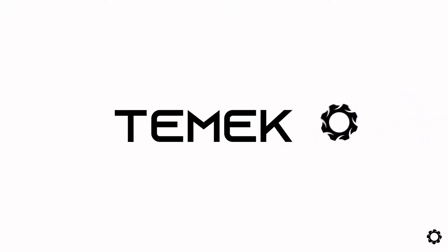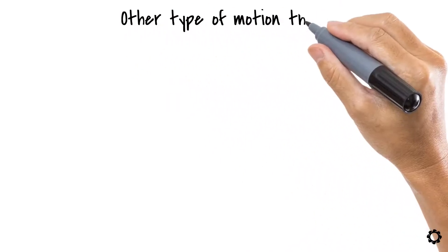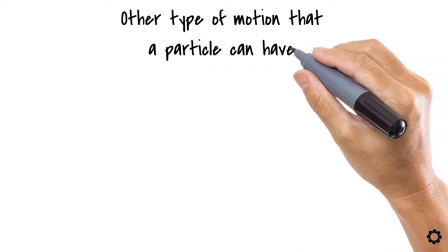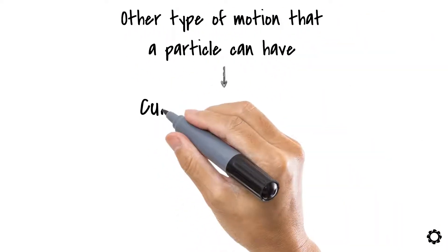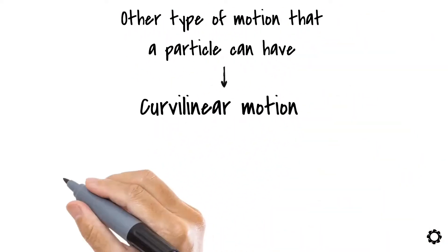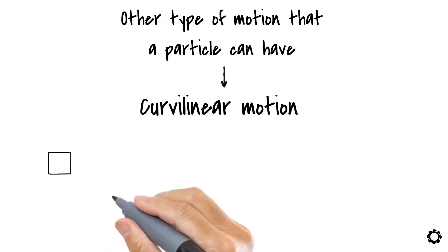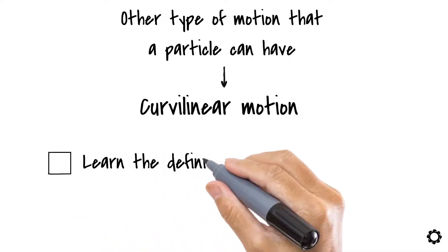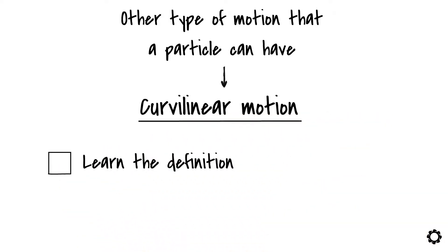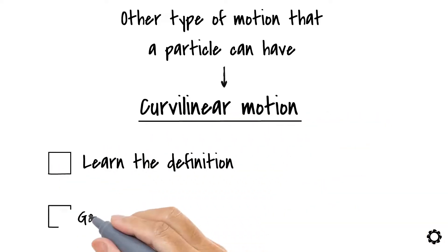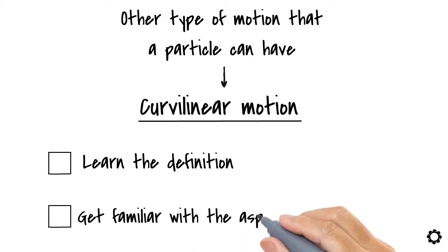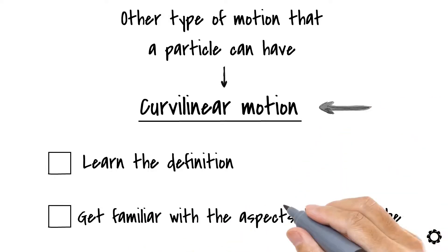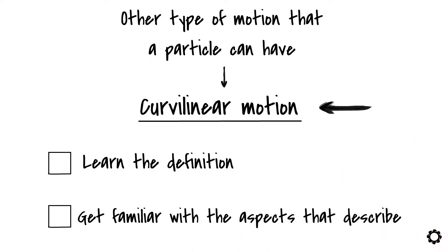Hi, and welcome to Temeco. In this video, we are going to discuss about the other type of motion that a particle can have, which is curvilinear motion. During this video, we'll learn the definition of curvilinear motion of a particle and get familiar with the aspects that describe this kind of motion. Let's get started.